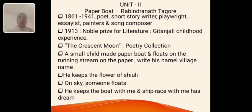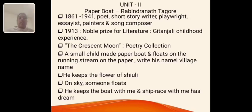Unit 2: The poem Paper Boat, by Rabindranath Tagore. He was born in the year 1861 and died 1941. He is a miscellaneous person because he is a poet, short story writer, playwright, essayist, painter and song composer. He received the Nobel Prize in 1913 for his work Gitanjali. This poem, Paper Boat, is taken from the poetry collection Crescent Moon.